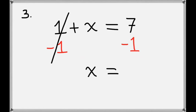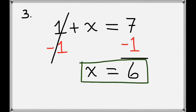And on the right hand side we'll take 7 minus 1, which gives us 6. So x equals 6 is our final answer.